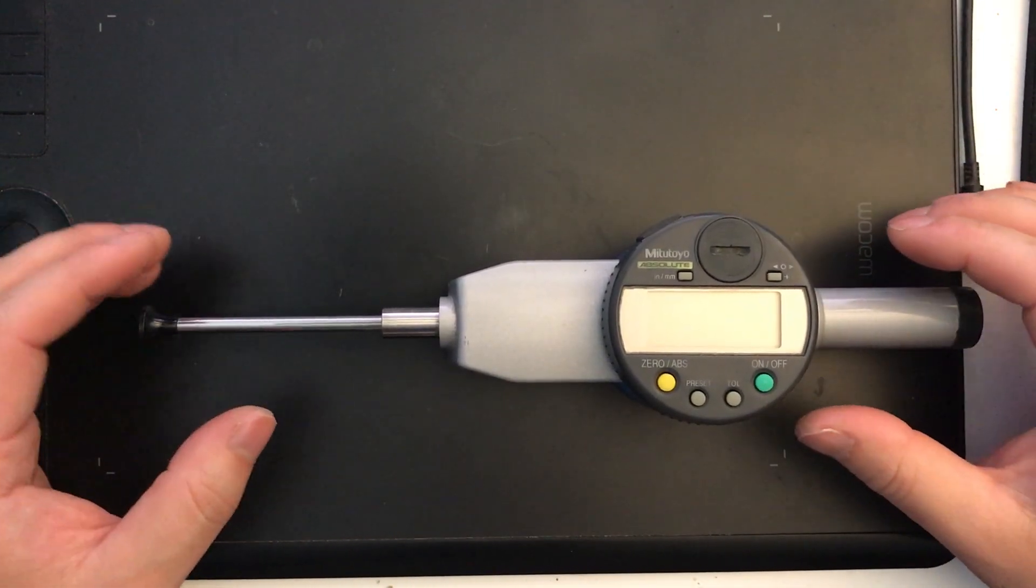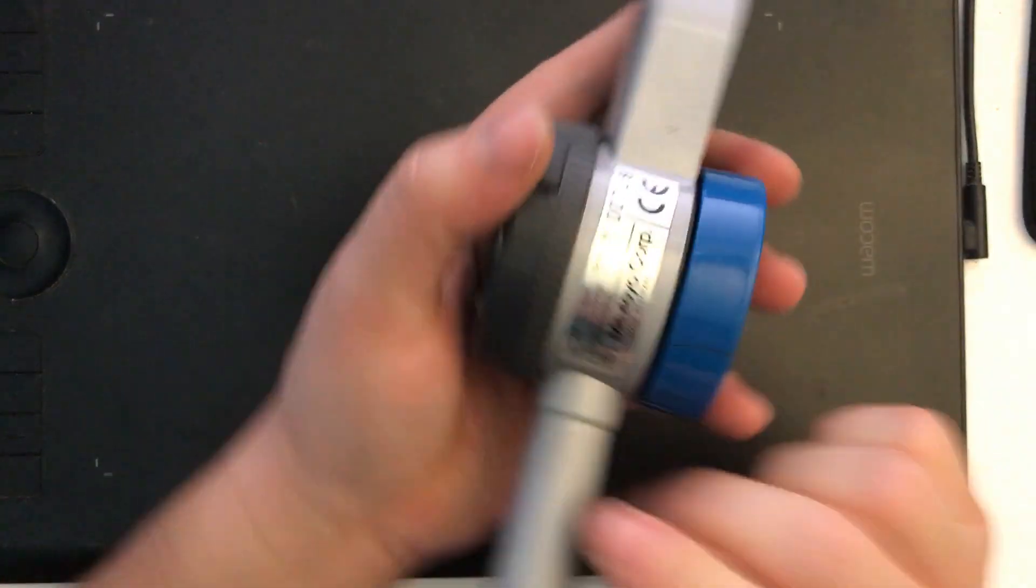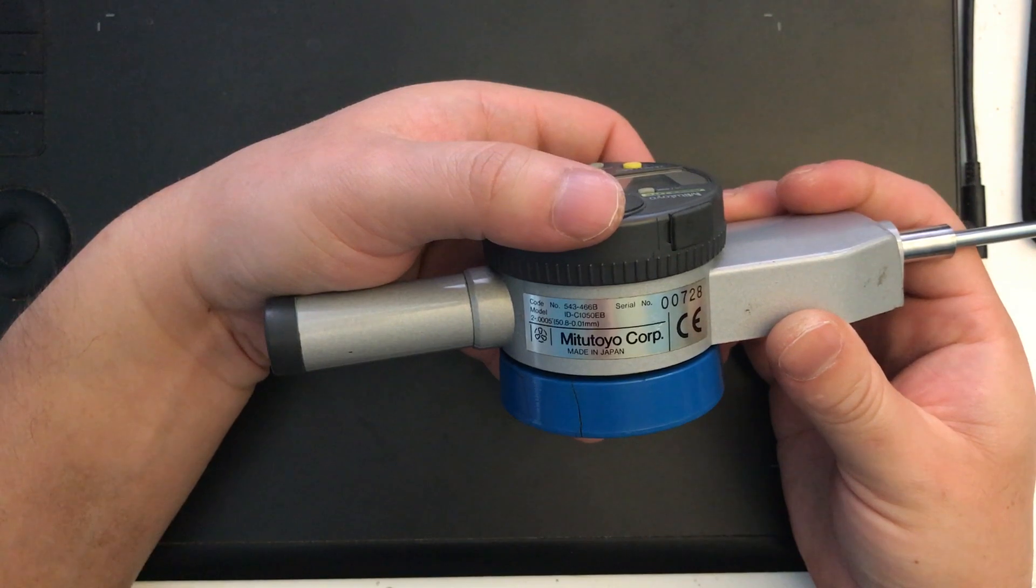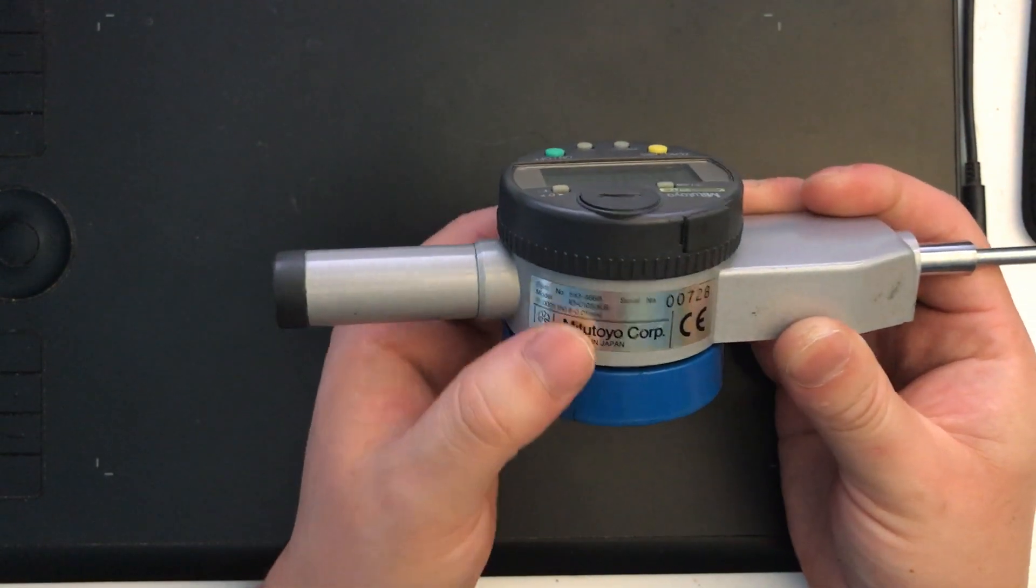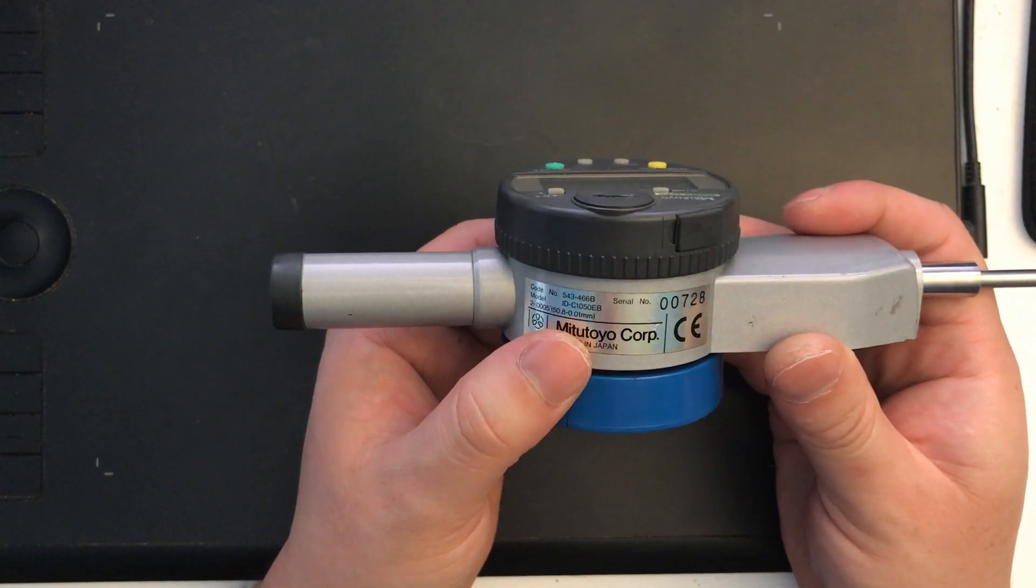Hello all you Mitutoyo fanboys and fangirls out there. What I have here is a Mitutoyo model ID-C1050EB and a code number or order number of 543-466B.